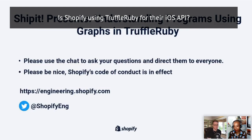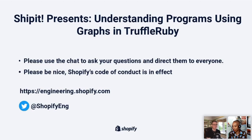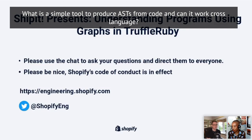What is a simple tool to produce ASTs from code, and can it work cross-language? There's an online web tool that lets you write in some source code and get an AST from it, and it works in multiple languages. If you search for an online AST tool, I think you'll find it. Most languages also come with some sort of command line tool to print out ASTs, but it's often completely different for every language. Looking at ASTs is useful — if you're looking at code with unusual syntax and don't understand what it's doing, printing out the AST can help you understand things like operator precedence and what stuff means.